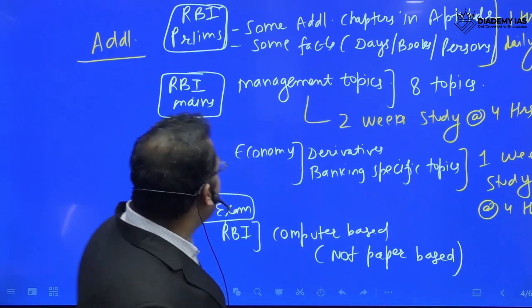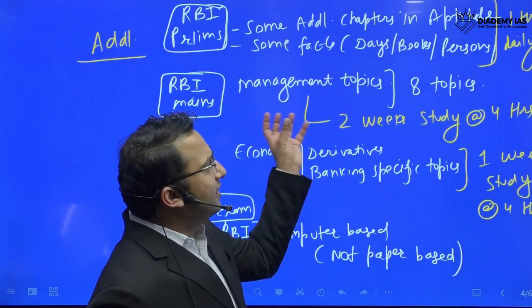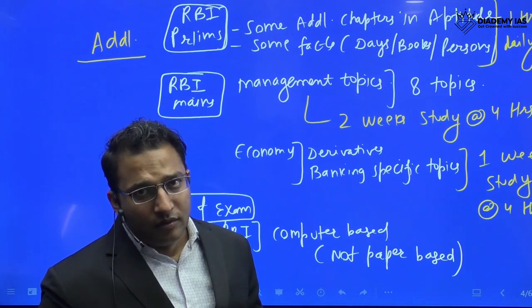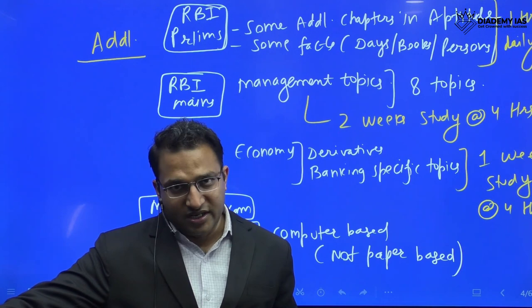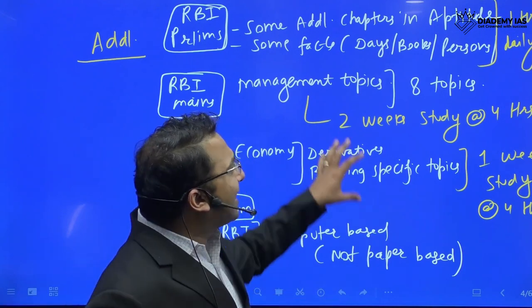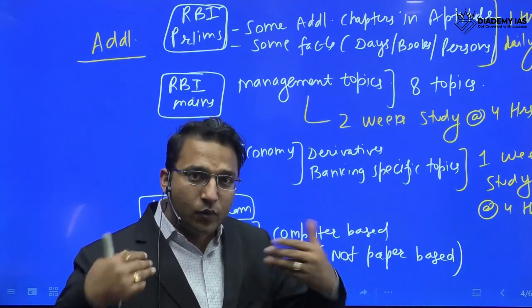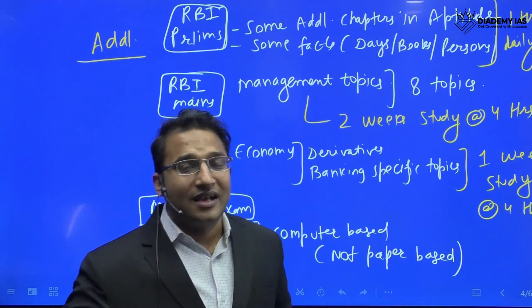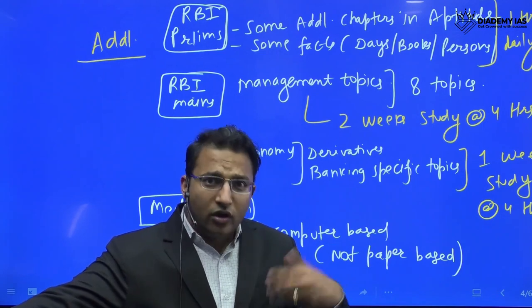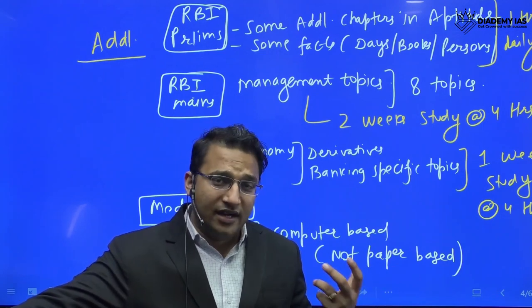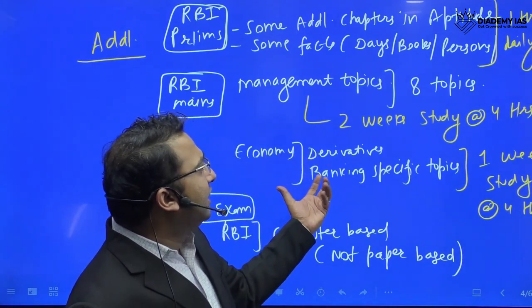For the RBI mains, there are management topics — eight topics including leadership, motivation, organizational change, and conflict management. You need a maximum of two weeks of study at four hours daily with the right material. This material is also available through commerce and accountancy optional coaching, so it can be completed quickly.